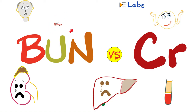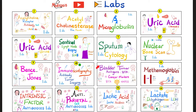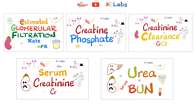Hey guys, it's Medicosis Perfectionatus, where medicine makes perfect sense. Let's continue our lab's playlist. We are in a series on nephrology. In previous videos, we talked about urea and the blood urea nitrogen, creatinine clearance and GFR estimation, as well as the serum creatinine. Today, it's time to compare between the serum blood urea nitrogen and the serum creatinine, both of which are elevated in kidney failure. Please watch my videos in order for maximum understanding and retention, particularly the previous five or six videos.